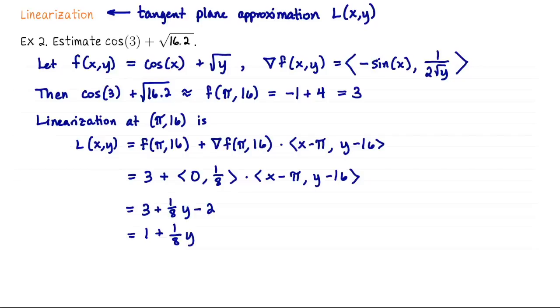Since f is differentiable, near (π,16), f(x,y) ≈ L(x,y). While it's hard to compute cosines and square roots, it's easy to evaluate L: just 1 plus a number divided by 8.